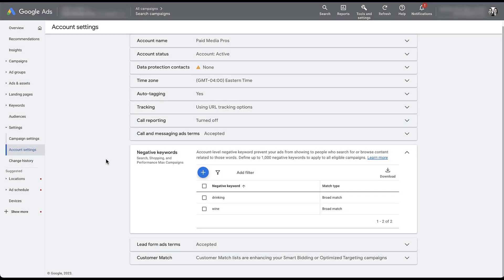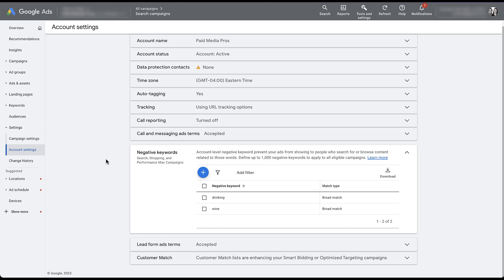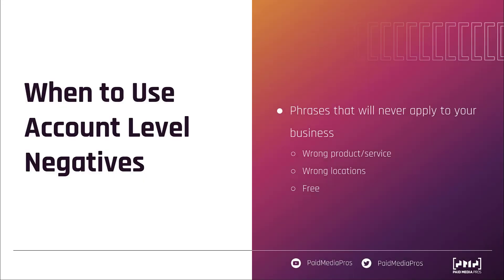Now that we know how account level negative keywords work and what they apply to, let me give some suggestions for when you might and might not want to use them. The best use is to prevent your ads from showing on searches that will never apply to your business. The optometrist example is a great one. If anything is the wrong product or service, that's an easy no-brainer to add. For example, tile shops that only sell tile — not install or repair it — might exclude terms like repairs, installation, or contractor.